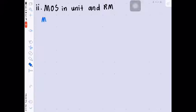Calculate the margin of safety, MOS, in unit and RM. Margin of safety is actual expected sales minus sales unit at break-even point.